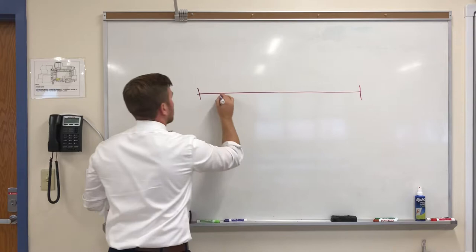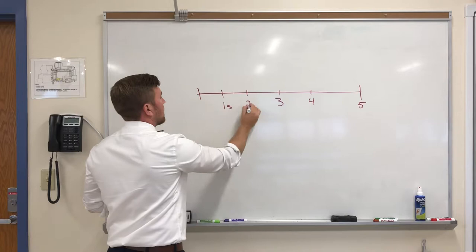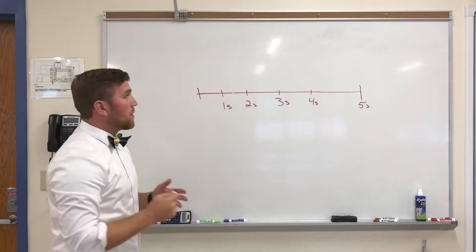So if I have something like this, and then perhaps I have one, two, three, four, and five seconds. So each of these represents one second, one space in time.